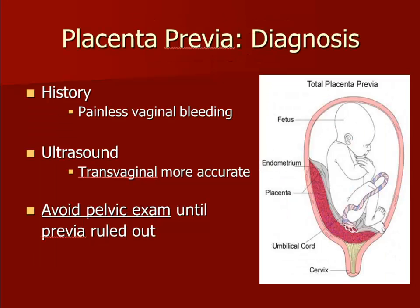A placenta previa is diagnosed by ultrasound. Because ultrasounds are frequently performed in pregnancy, the diagnosis is usually made before any bleeding has occurred. When bleeding does occur, it is typically painless. If a pelvic examination is performed in a patient with a placenta previa, the placental tissue over the os can be disrupted, leading to catastrophic bleeding.